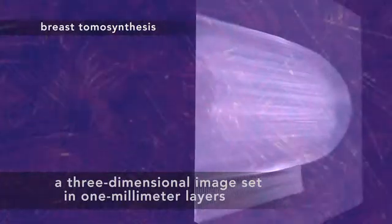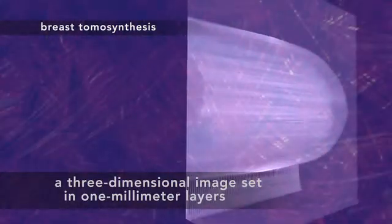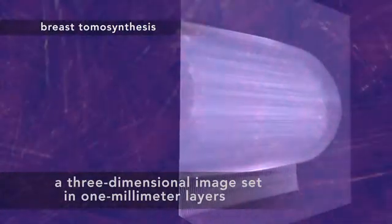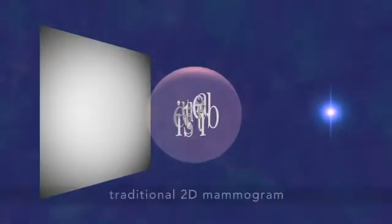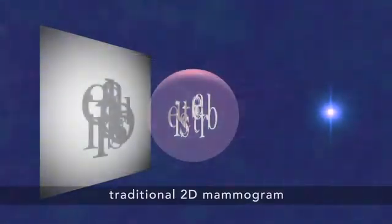So now the doctors can see and search through your tissue in one-millimeter layers. Why is this a good thing? Well, a traditional 2D mammogram shows all the breast tissue at a glance. That means one feature can hide in the shadow of another.